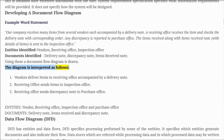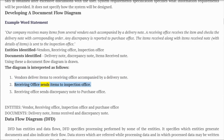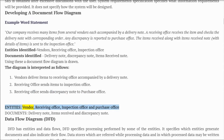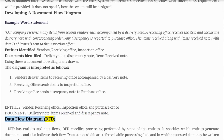The diagram is interpreted as follows: vendors deliver items to the receiving office accompanied by a delivery note. The receiving office sends items to the inspection office and sends a discrepancy note to the purchase office. Entities: vendor, receiving office, inspection office, and purchase office. Documents: delivery note, items received note, and discrepancy note.